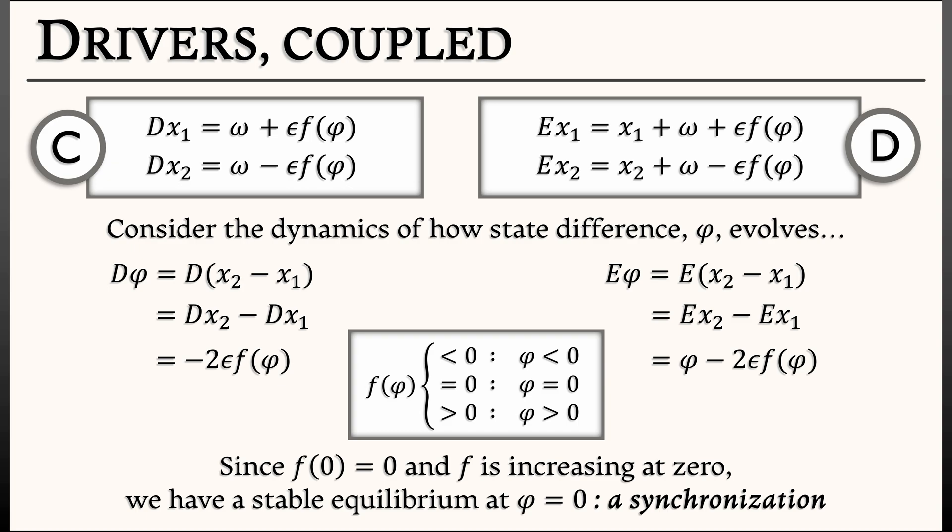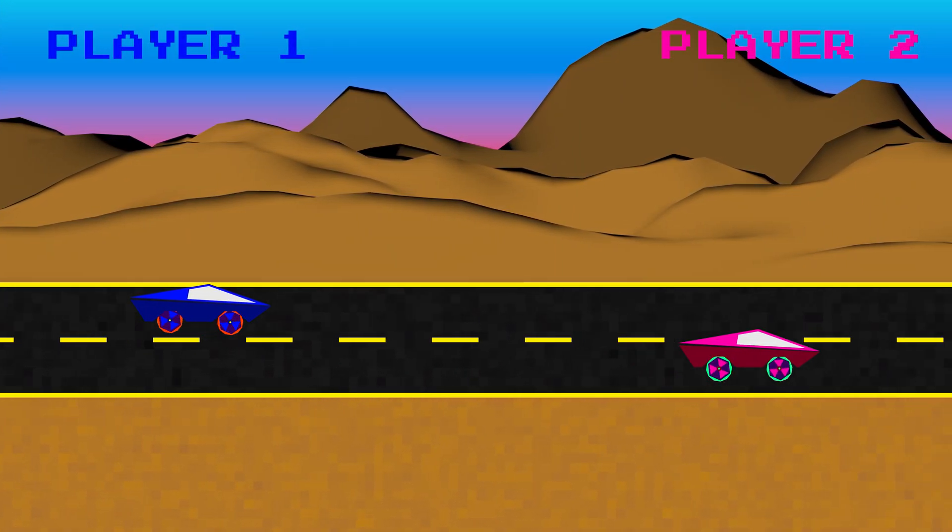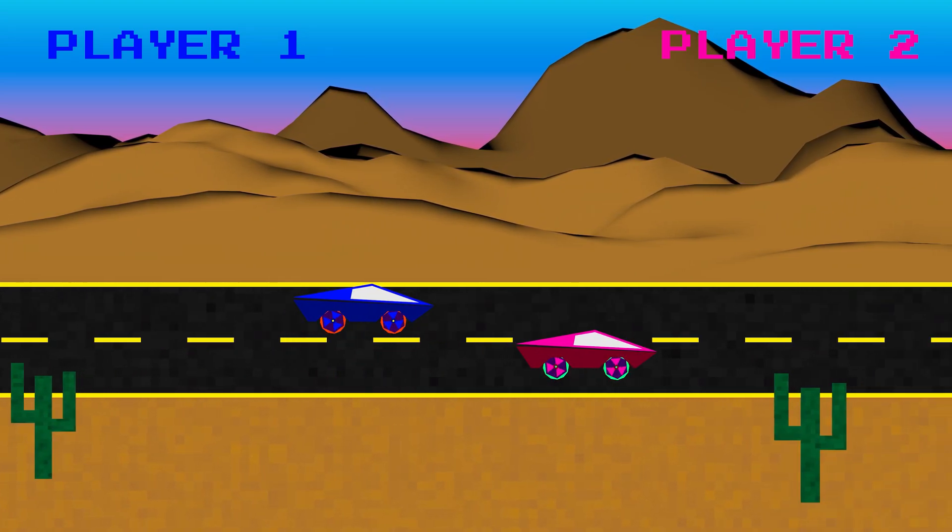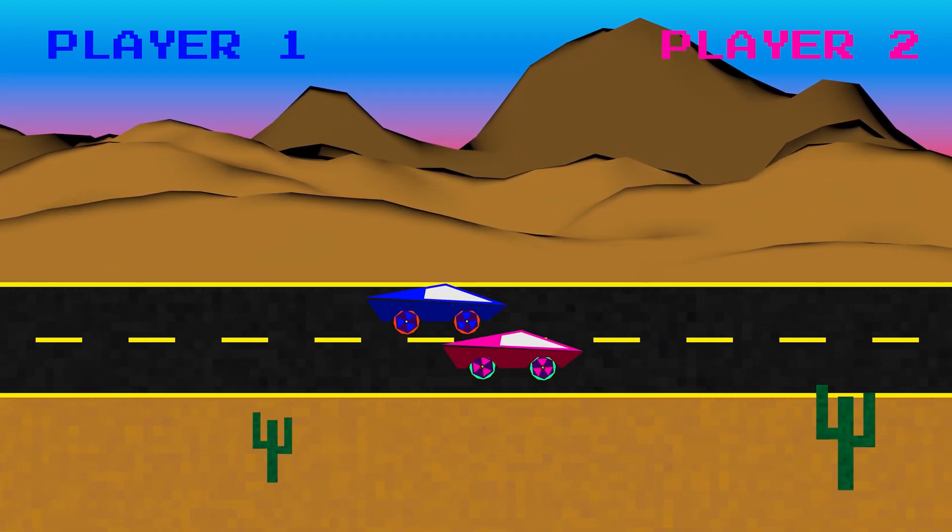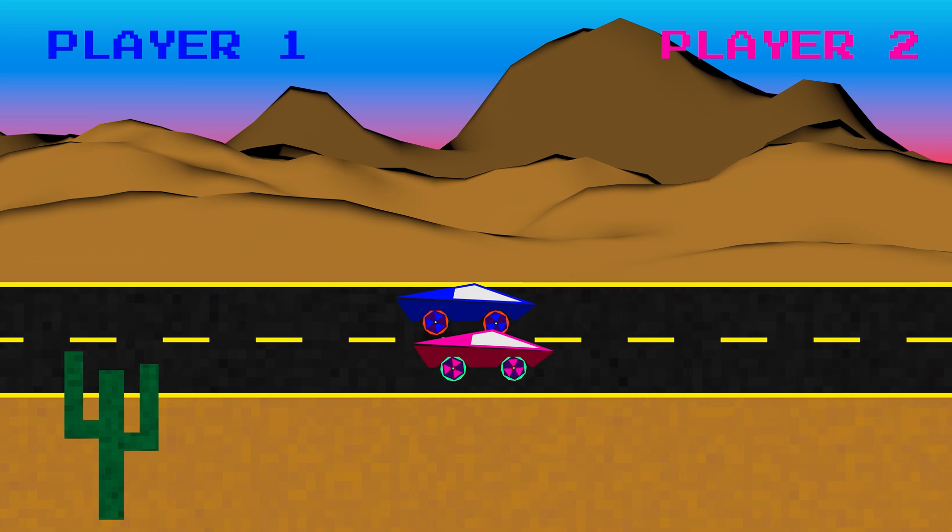because f is increasing at 0, we have a stable equilibrium. If that f were differentiable, the first derivative at 0 would be positive. And since epsilon is small, this means that we have a stable equilibrium. Now, what that means is that the entire system is going to evolve in such a way that the two different drivers, they slow down, they speed up, they do whatever they do, but they converge to a synchronized state.